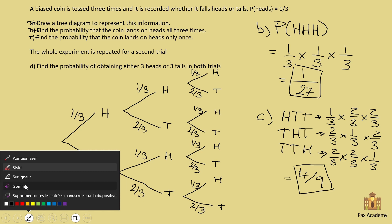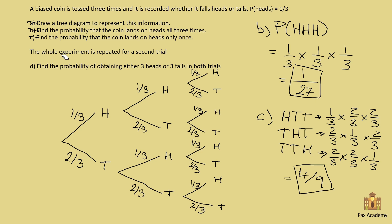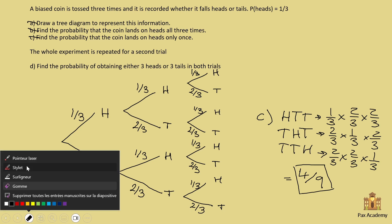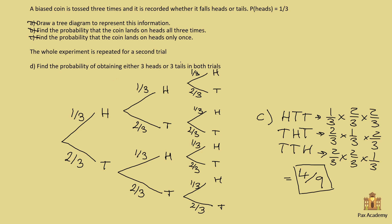Part D says the whole experiment is repeated for a second trial — so this tree diagram is repeated a second time. Find the probability of obtaining either three heads or three tails in both trials. So this is the probability of head, head, head plus the probability of tails, tails, tails. But because it must happen in both trials, whatever probability we get is going to be squared.